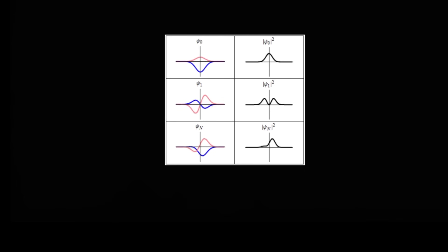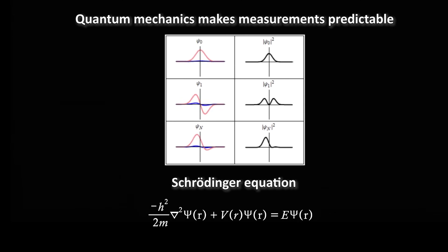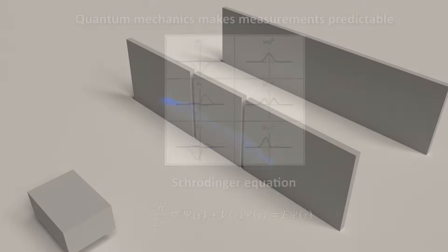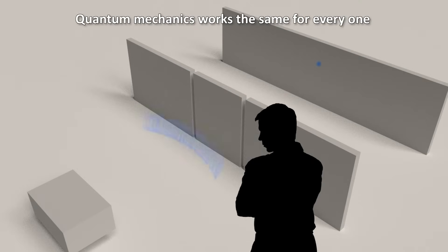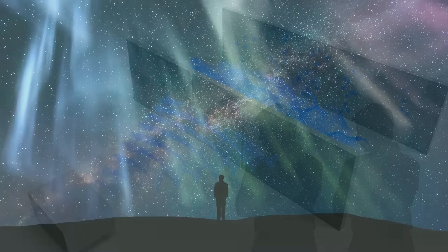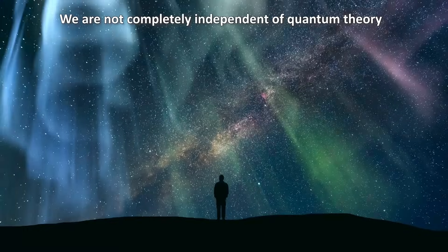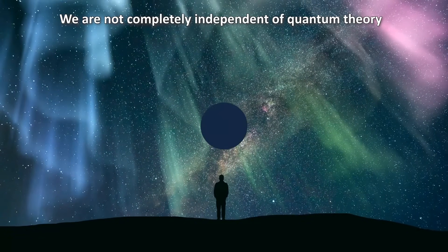But this doesn't mean that an objective reality doesn't exist. Quantum mechanics gives us a theory that makes our measurements predictable, and it works the same for everyone, so it's repeatable. Predictability and repeatability are the hallmarks of an objective reality. But it appears we are not completely independent of this reality, since we are also part of the universe that quantum theory describes. Perhaps quantum mechanics is simply the kind of theory we need to understand a universe of that kind.